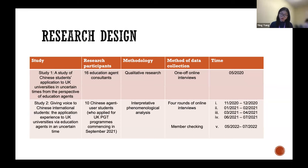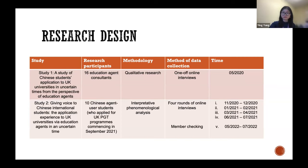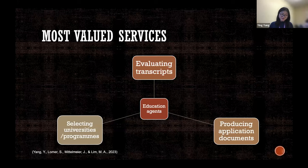IPA highlights three levels of experience interpretation: what agent-user students' university application experiences are, how those students interpret their own experiences, and how I as a researcher interpret how the students interpret their experiences. Today, I'd like to discuss three themes, starting with the most valued services. Among the range of services education agents provide, this project demonstrates that evaluating transcripts, selecting potential programs, and producing application documents are most valued by agent-user students in China.